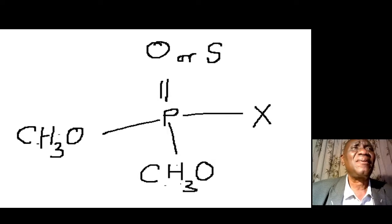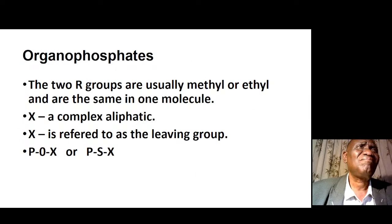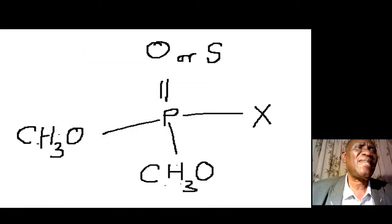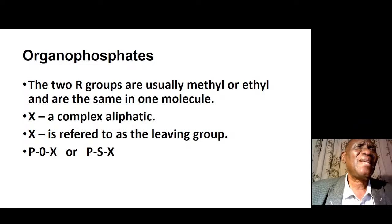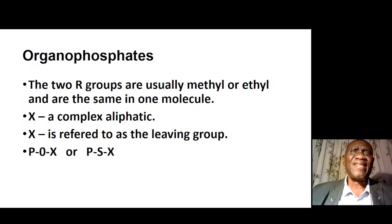Here is an example of an organophosphate molecule. The two other groups are usually methyl and ethyl — they are the same within one molecule. X is a complex aliphatic group, meaning there are many carbon atoms there, and X is referred to as the leaving group. It can be P-O-X or P-S-X, with O and S representing oxygen and sulfur respectively.